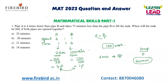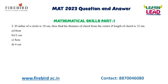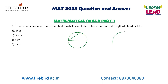Let us see the next question. If the radius of a circle is 10 centimeters, find the distance of a chord from the center if the length of the chord is 12 centimeters. There are more questions based on geometry in the MAT paper. A chord is formed by marking two points on the circumference of a circle and joining them; the largest chord is the diameter. Let us take a circle with center C.